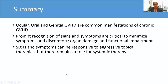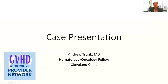In summary, ocular, oral, and genital GVHD are really common manifestations of chronic GVHD. Prompt recognition of signs and symptoms is critical to minimize symptoms, discomfort, as well as more significant organ damage and functional impairment. Signs and symptoms can be very responsive to aggressive topical therapies, but there still remains a role for systemic therapy in mucocutaneous GVHD. We can now move on to the case presentation.